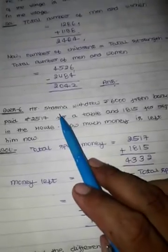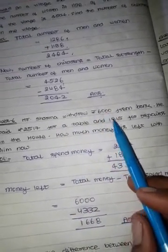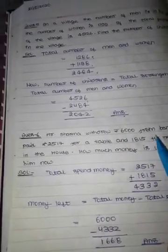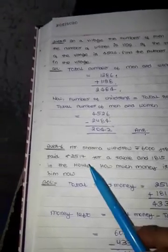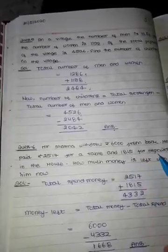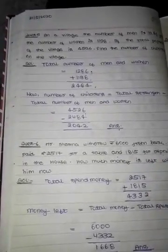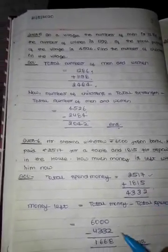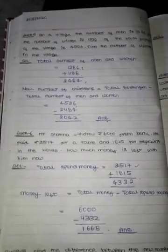Question number 6: Mr. Sharma withdraws 6000 rupees from the bank. He paid 2517 for repairs in the house. So we have to add 6000, then we have to subtract.